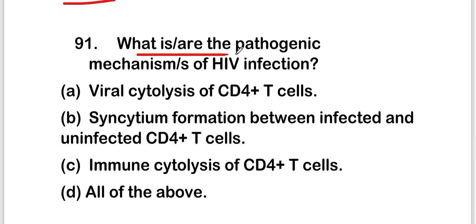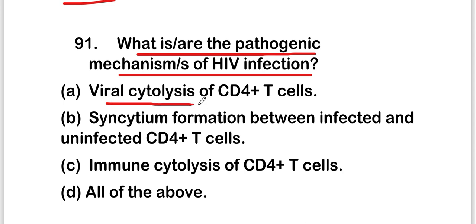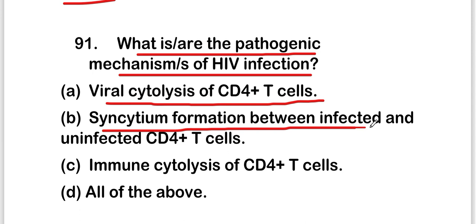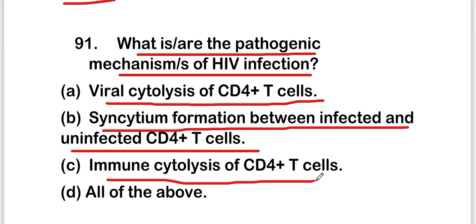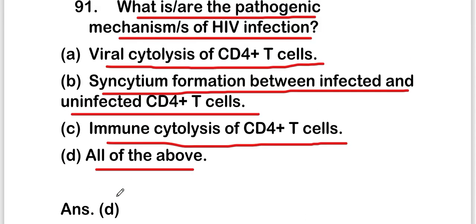The next question is: what are the pathogenic mechanisms of HIV infection? Options are viral cytolysis of CD4+ T cells, syncytium formation between infected and uninfected CD4+ T cells, immune cytolysis of CD4+ T cells, or all of the above. The right answer is option D — all of the above are pathogenic mechanisms of HIV infection.